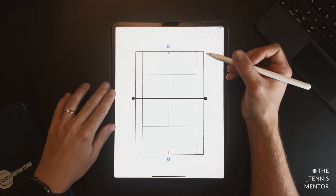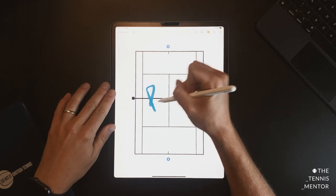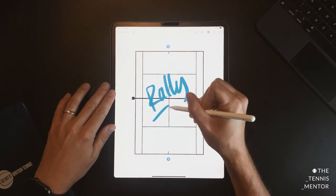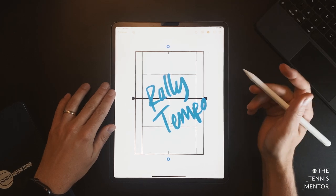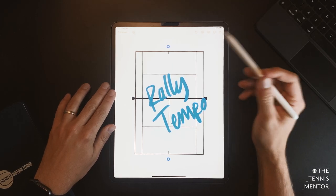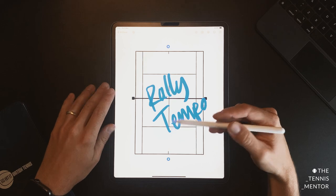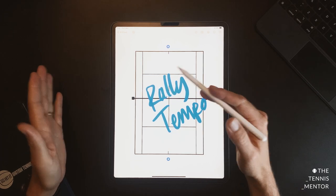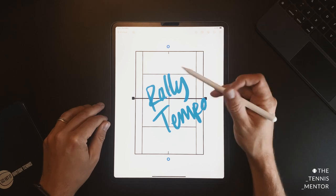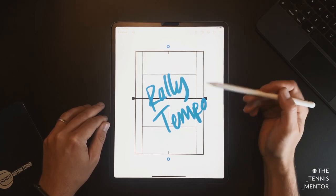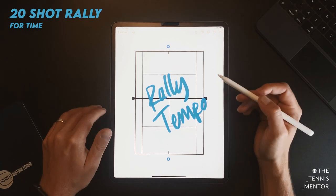In drill number one we are going to be looking at rally tempo. So this drill is very simple. You need two players, this can be done on a full singles court or you can use half of a court if you don't have the space. The aim of the game is for you to work cooperatively with your partner to hit a 20 shot rally.